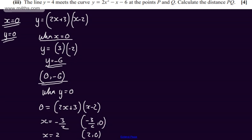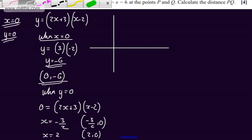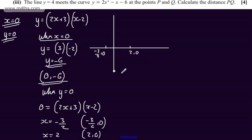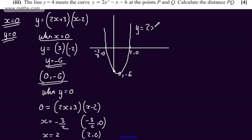So we need to sketch this. This will be a positive parabola. We're going to have the point of intersection at minus 3 over 2 comma 0, then at 2 comma 0, and then a point of intersection with the y-axis at 0 comma minus 6. The parabola will open upwards, come down to a minimum point, turn around, and then be symmetric. So y equals 2x squared minus x minus 6.